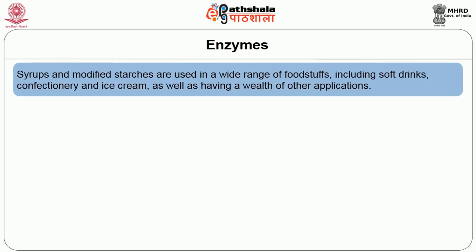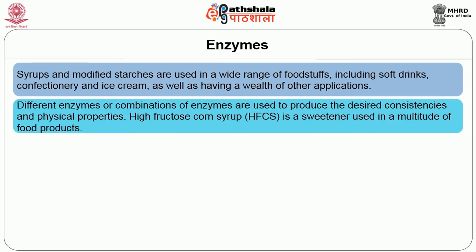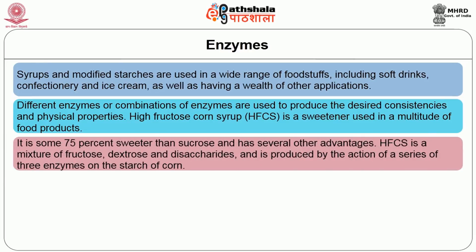Syrups and modified starches are used in a wide range of foodstuffs including soft drinks, confectionery and ice cream, as well as having a wealth of other applications. Different enzymes or combinations of enzymes are used to produce desired consistencies and physical properties. High fructose corn syrup, called HFCS, is a sweetener used in a multitude of food products. It is some 75% sweeter than sucrose and has several other advantages. HFCS is a mixture of fructose, dextrose and disaccharides, and it is produced by the action of a series of three enzymes on the starch of corn.